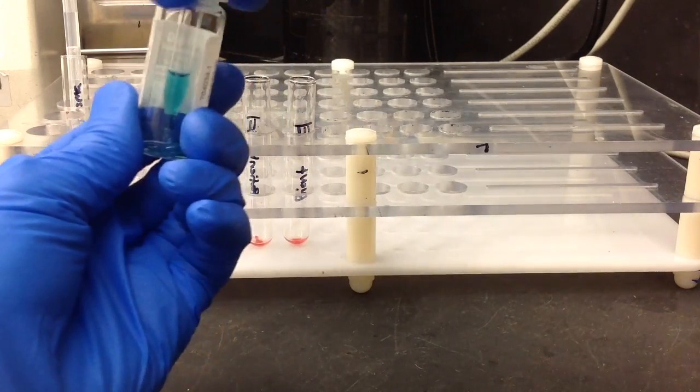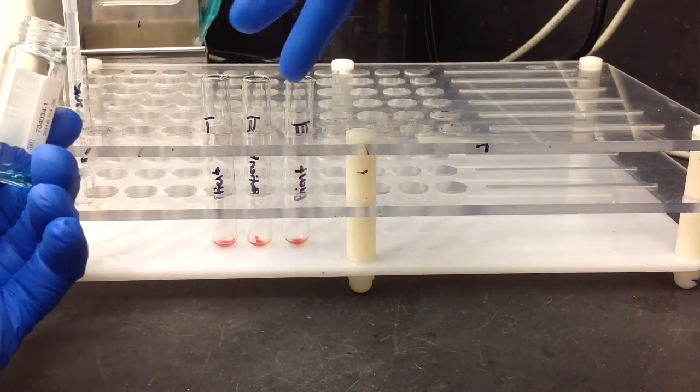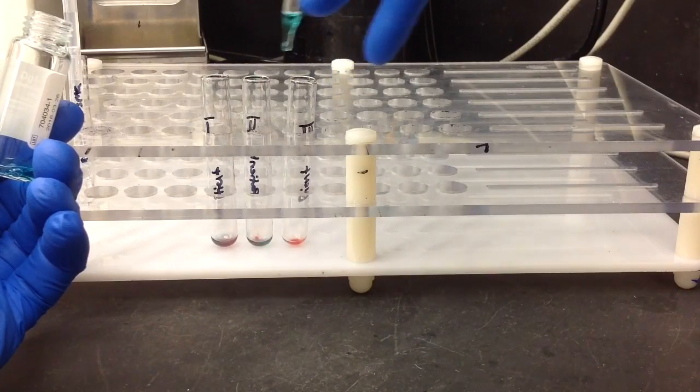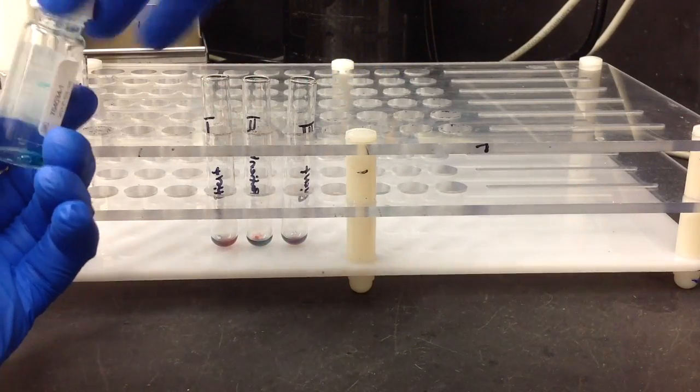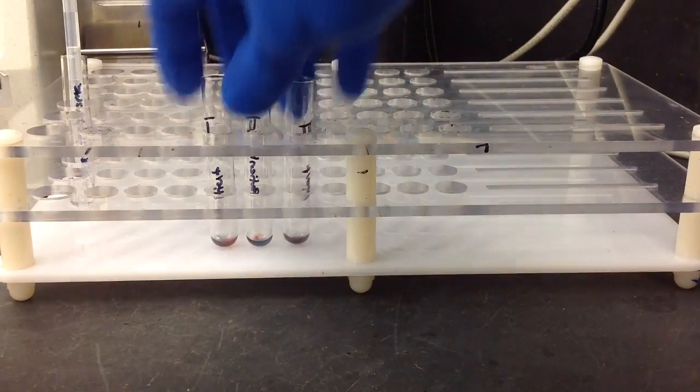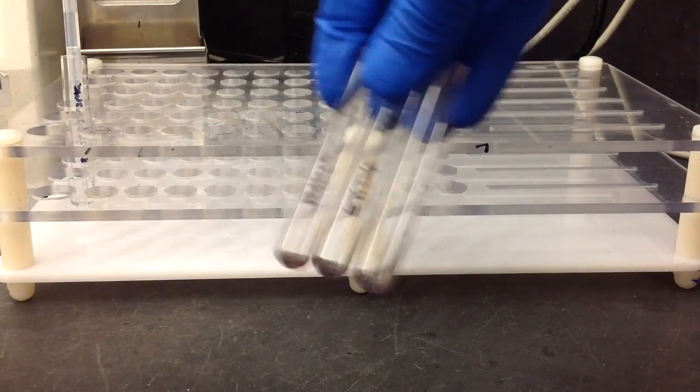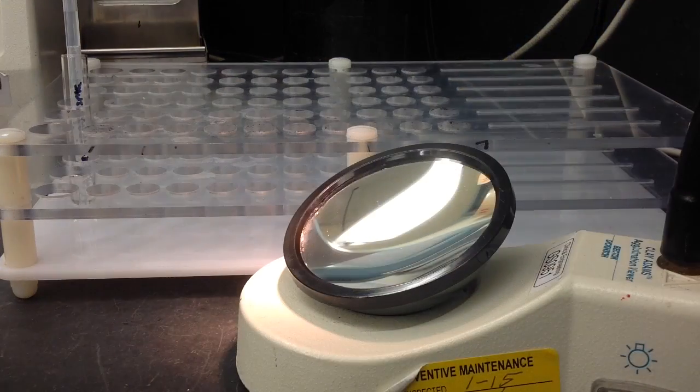...and then after they've been washed you want to add two drops of AHG to each one of the tubes. And then from here just give them a quick mix, pop them in the centrifuge, and then grab...